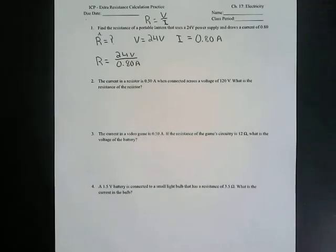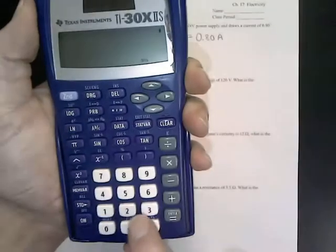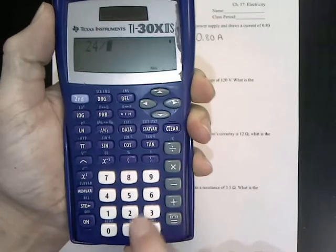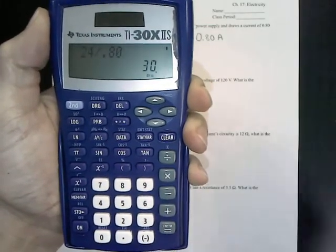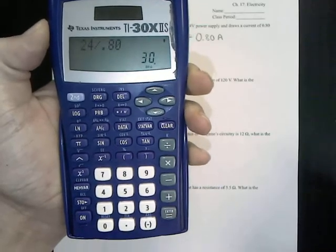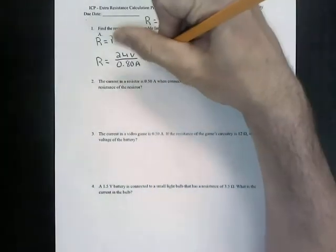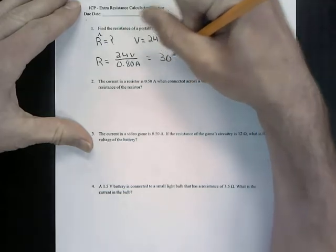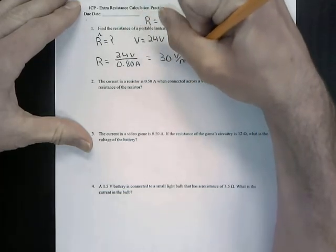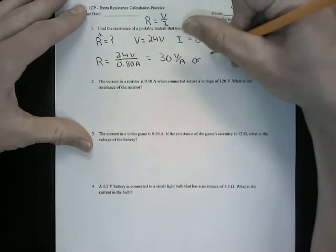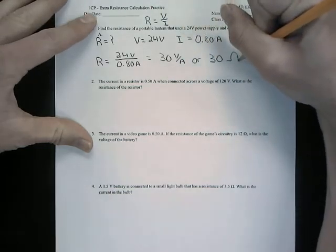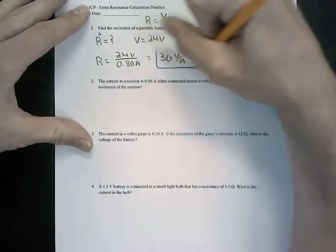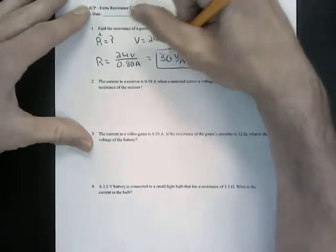Now I'm going to plug this into my calculator. So I'm going to take 24 divided by 0.80 amps. And I get a resistance of 30. Now, this can be expressed as 30 volts per amp, or more commonly used, this is 30 ohms. Okay, so that would become our answer.